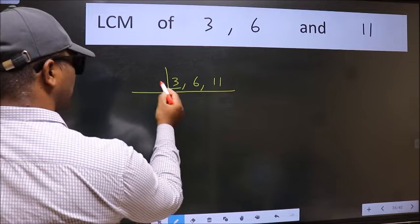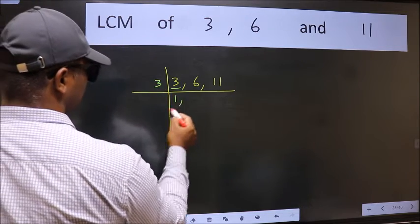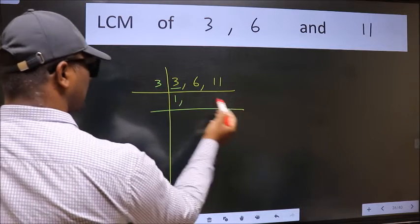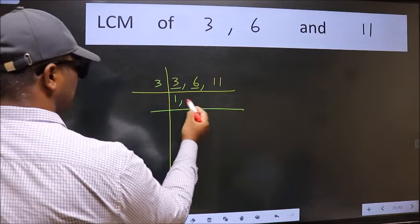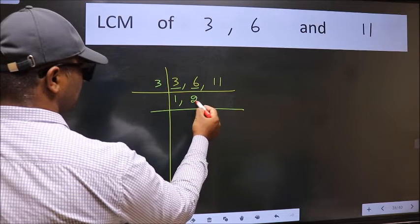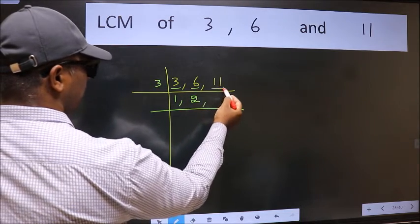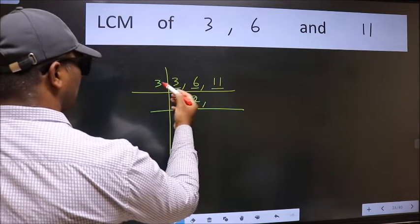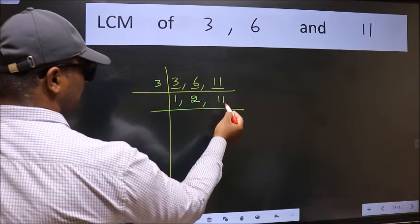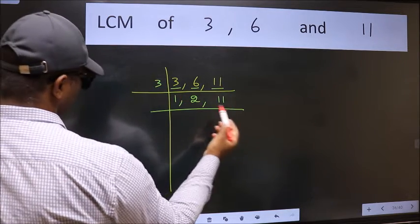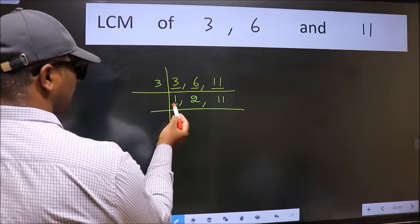3 is a prime number, so 3 divides by 3. The other number 6 — when do we get 6 in the 3 times table? 3 times 2 is 6. The other number 11 is not divisible by 3, so we write it down as it is. Now we got 1 here.